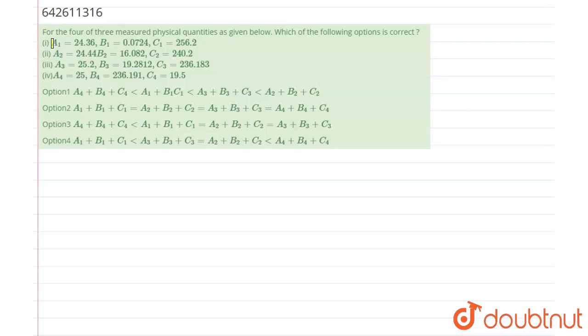The question is related to application of significant figures. According to the question, for four sets of three measured physical quantities given below, which of the following option is correct? We have given four measured values: a1 b1 c1, a2 b2 c2, a3 b3 c3, and a4 b4 c4. Out of four we have to find which of the following option is correct.